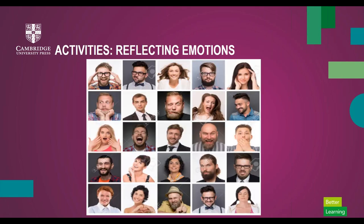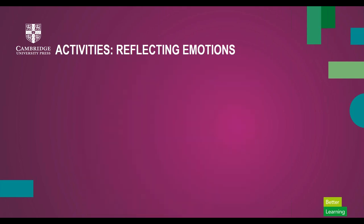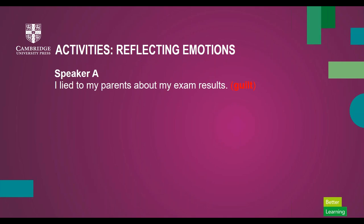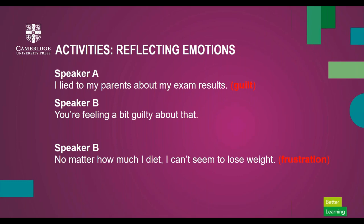We can mirror body language — this happens subconsciously in conversation when a positive connection occurs, but it can also be a technique consciously used to build rapport, because people are drawn to what's similar. We can also mirror the emotions of a speaker to show empathy, seen in copying the speaker's facial expressions or naming the speaker's feeling. Having pre-taught vocabulary for emotions, in controlled practice pairs A and B take turns reading sentences with emotion. The listener guesses the emotion and reflects it back. For example, Speaker A: 'I lied to my parents about my exam results.' Speaker B: 'You're feeling a bit guilty about that.' Then Speaker B: 'No matter how much I diet, I can't seem to lose weight.' Speaker A: 'How frustrating.'